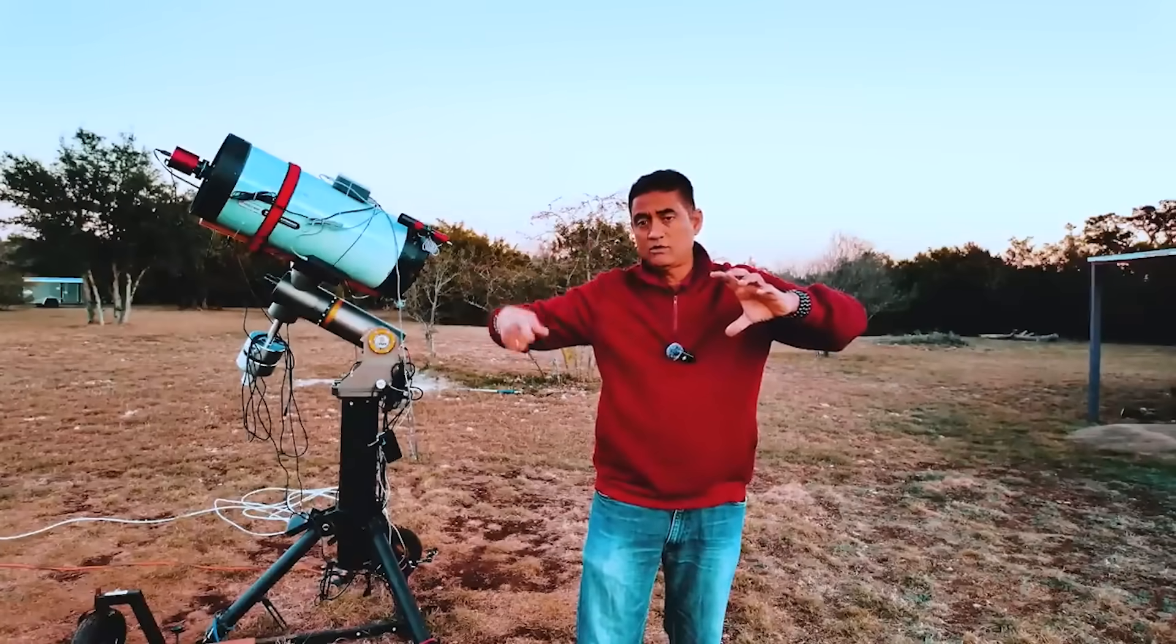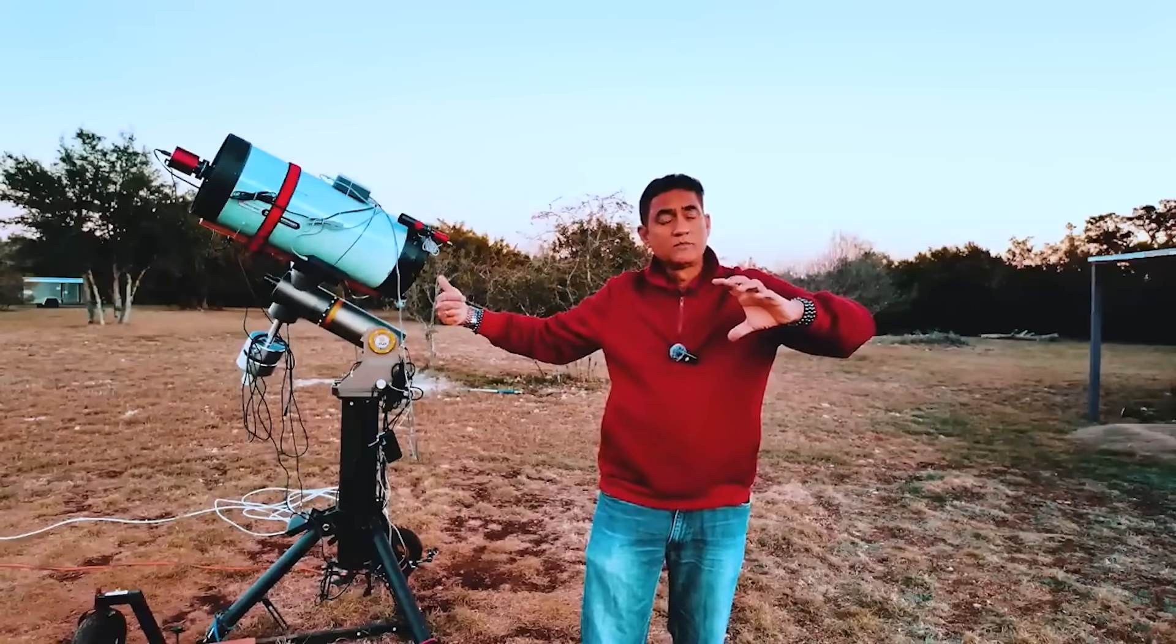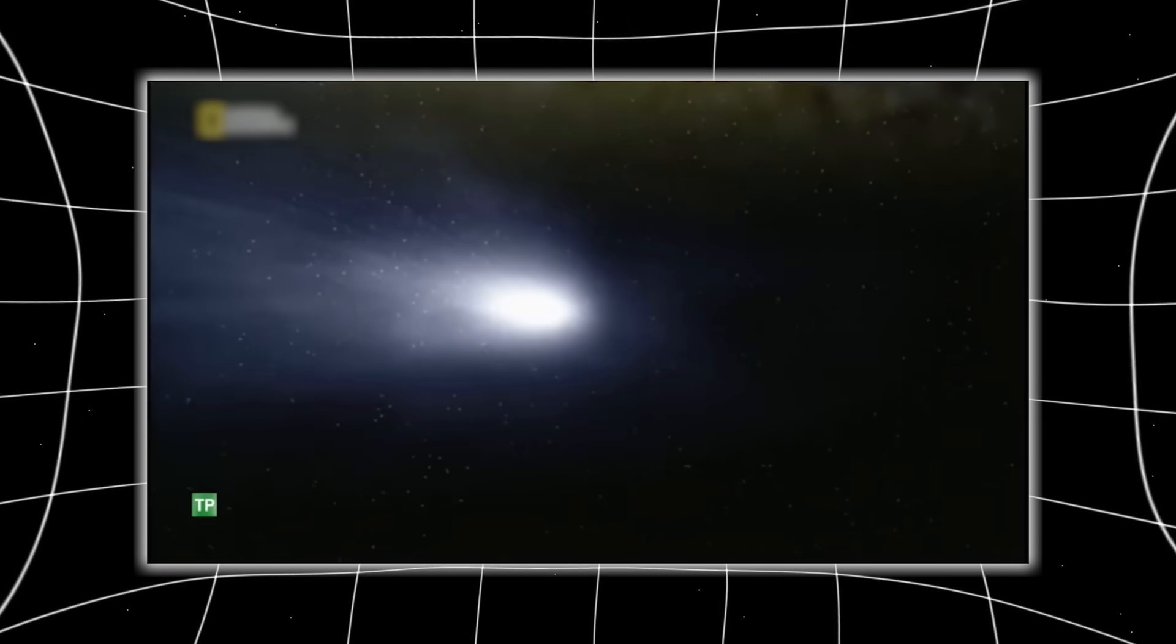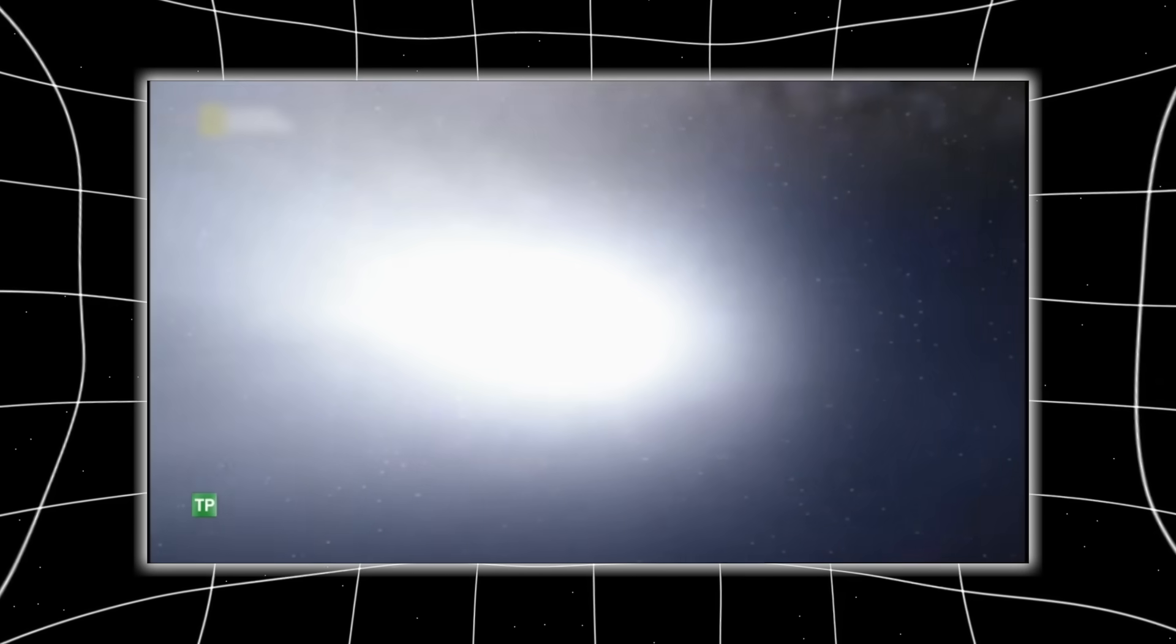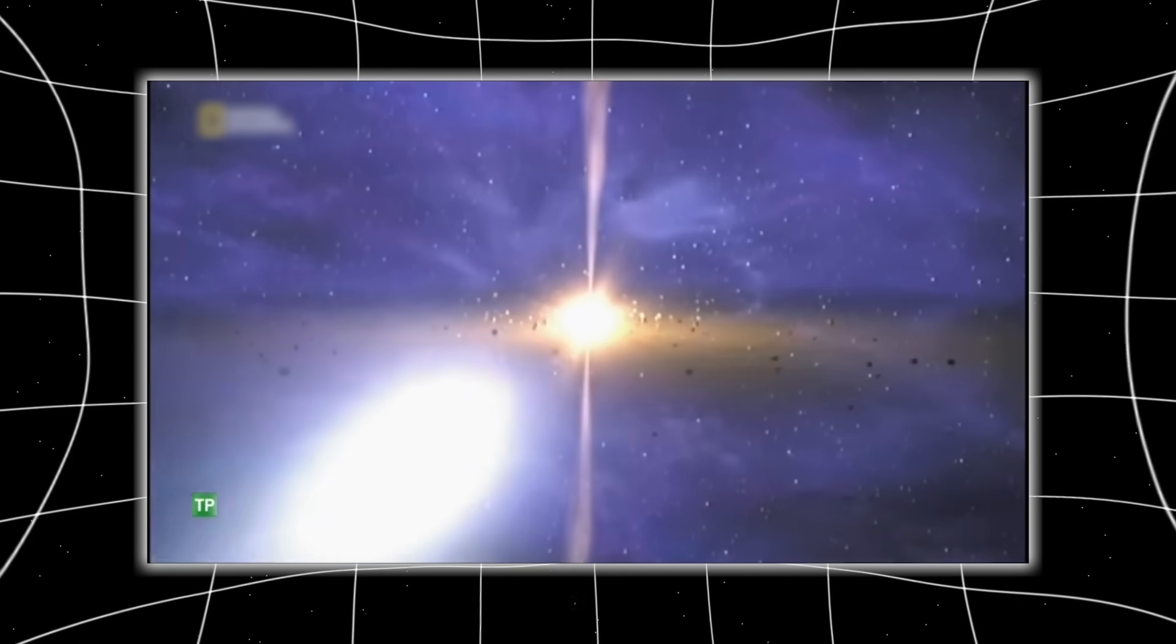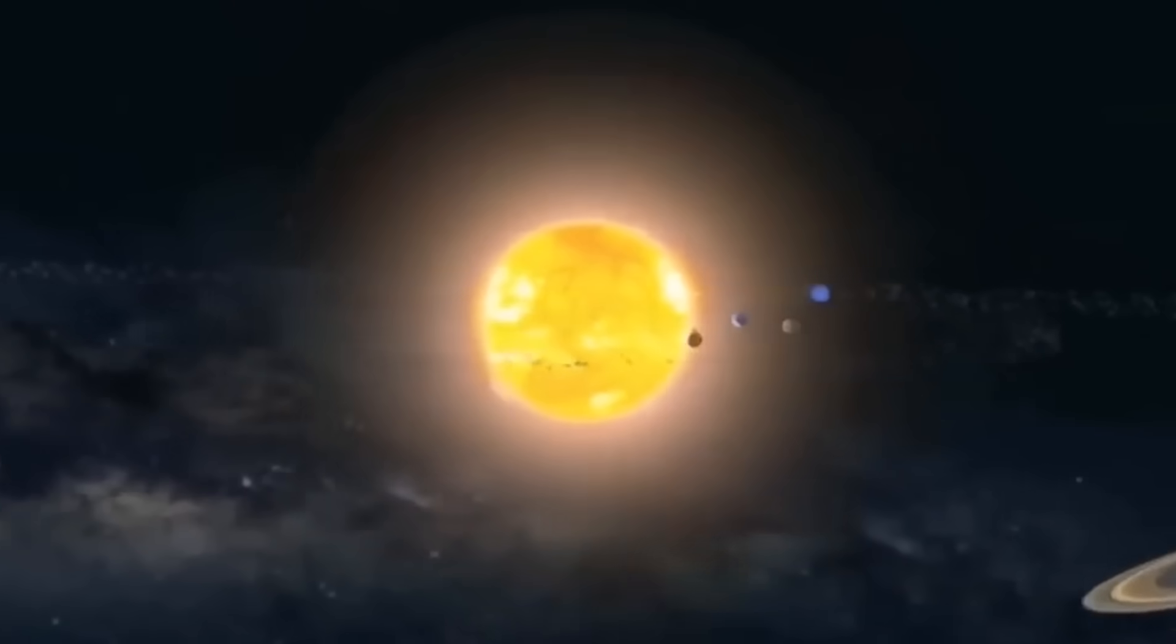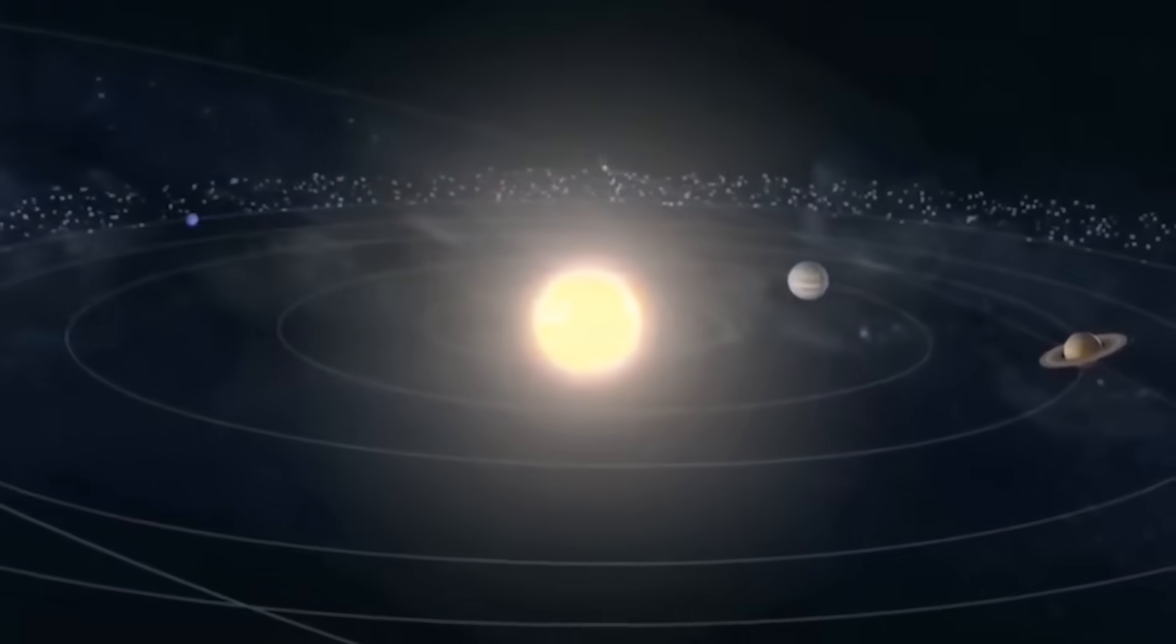Ray stresses that the only way to truly understand the 400 times brightness surge is to contextualize it with scale. This isn't just a bright comet because of chemistry. It's bright because it is huge, one of the largest ever recorded, and it comes from an alien star system. The combination makes it a scientific treasure, a once-in-a-lifetime chance to study the material of another solar system before it disappears forever.